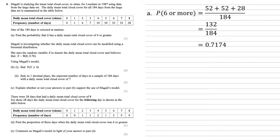Magali is now investigating whether the daily mean total cloud cover can be modelled using a binomial distribution. She uses the random variable X to denote the daily mean total cloud cover and believes that X is modelled by a binomial distribution of size 8 and probability 0.76.